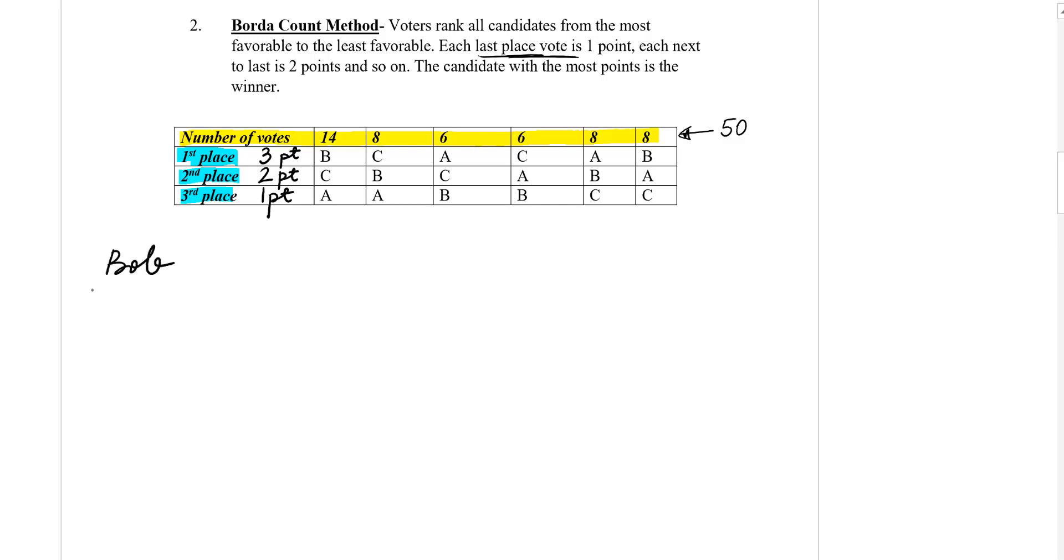Now Bob, let's start with Bob, because B is the first letter here. Bob has 14 votes times three, because it has three points on this position. Then plus, Bob has eight votes on the second place, which means two points.